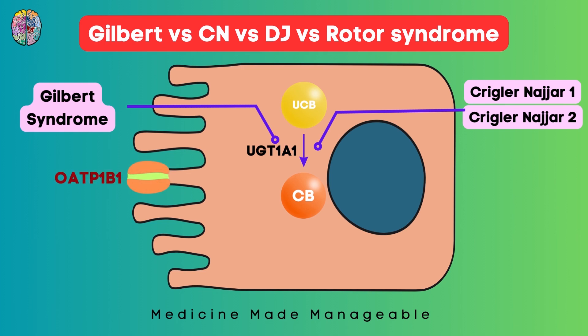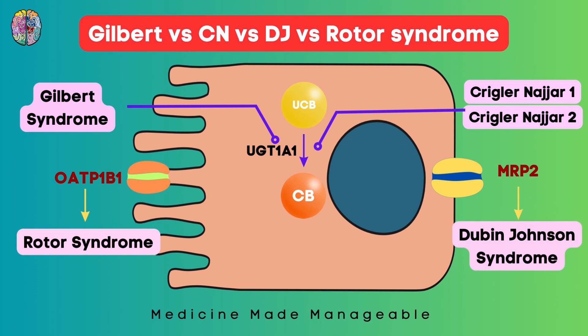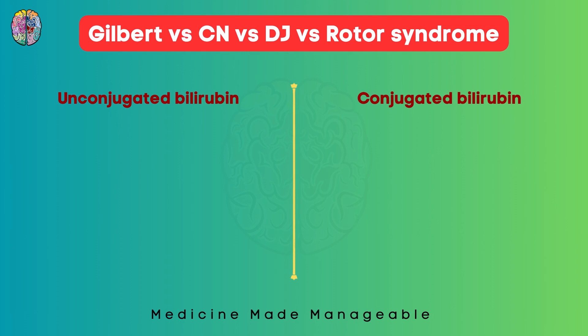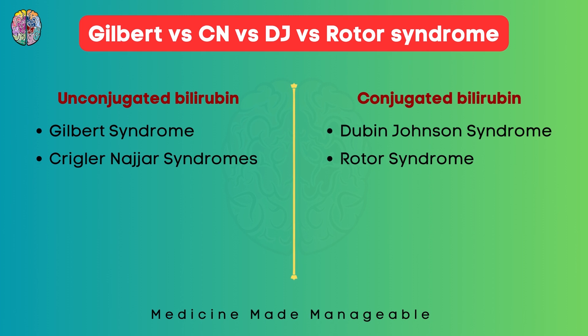There is a protein channel called OATP1B1 — a defect in this leads to Rotor syndrome. There is another channel called MRP2 — a defect here leads to Dubin-Johnson syndrome. These four syndromes can be divided based on what bilirubin is increased: Gilbert and both Crigler-Najjar syndromes show increased unconjugated bilirubin, while Dubin-Johnson and Rotor syndrome show increased conjugated bilirubin.